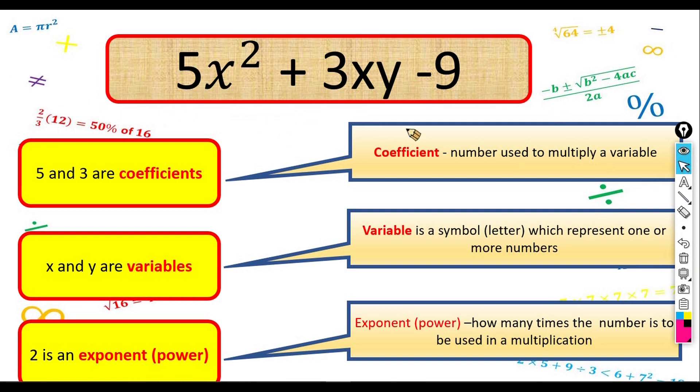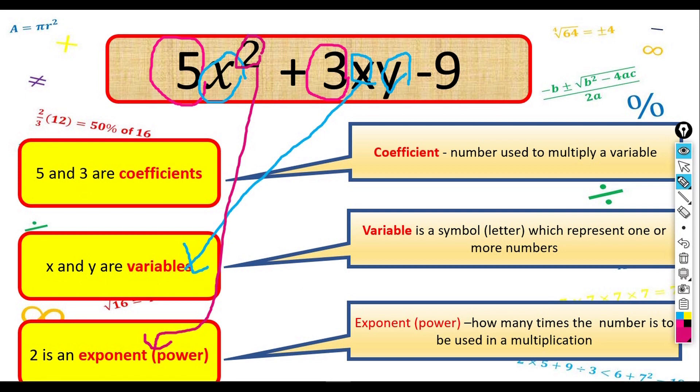So I repeat. 5 and 3 are coefficients. Then the X and the Y here are variables. The two here are exponent or we call it power. And the last one, 9, we call it Constant.